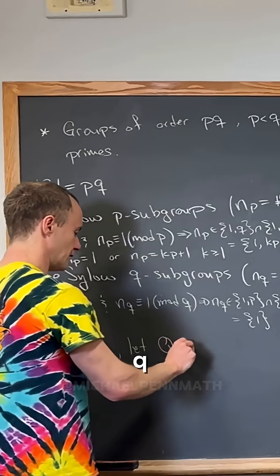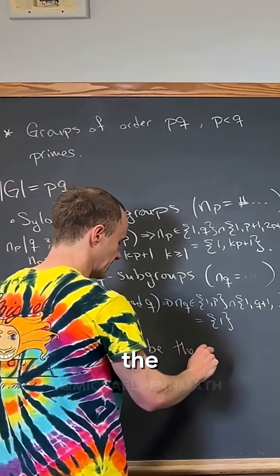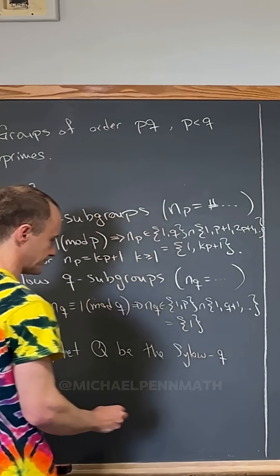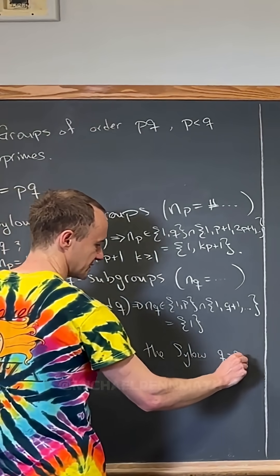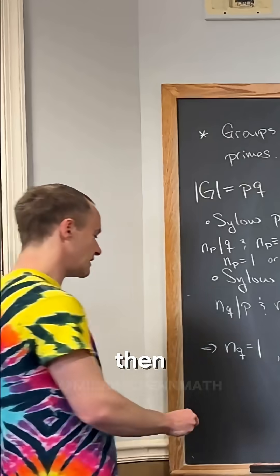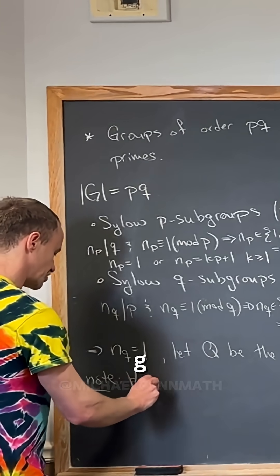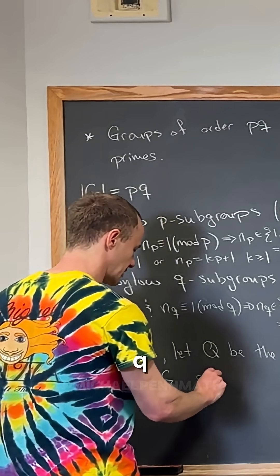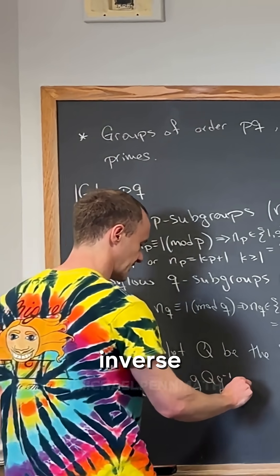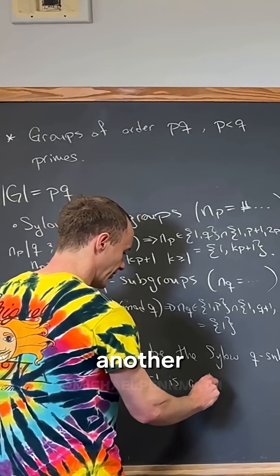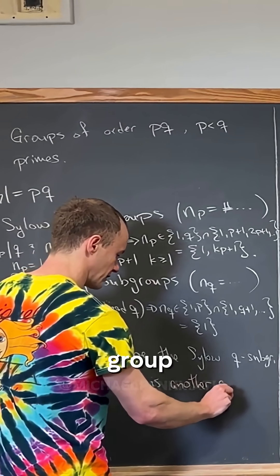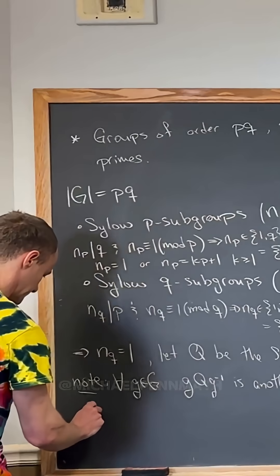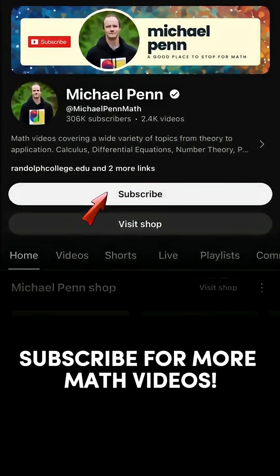Now let Q be the unique Sylow q-subgroup. Note that for all g in G, gQg⁻¹ is another subgroup of order q — that is, another Sylow q-subgroup.